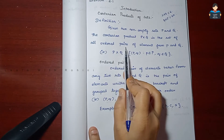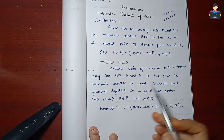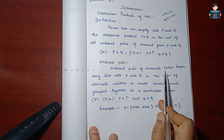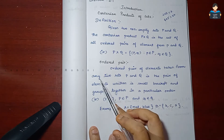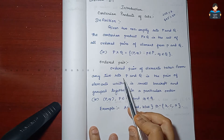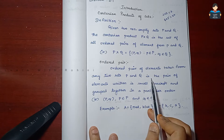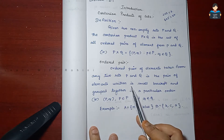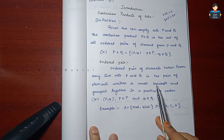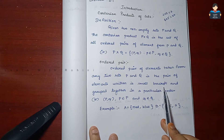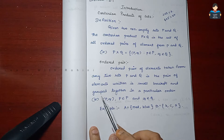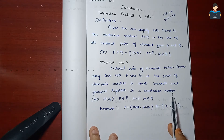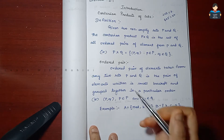An ordered pair of elements taken from any two sets P and Q is the pair of elements written in small brackets and grouped together in a particular order.